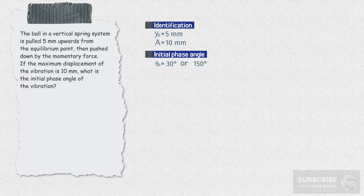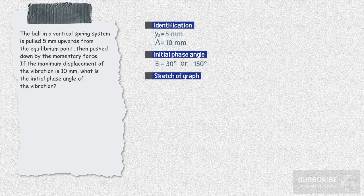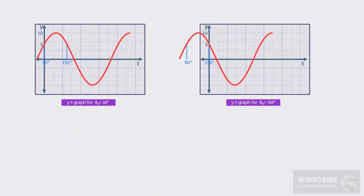To determine the appropriate value, draw a sketch of simple harmonic motion. Because the ball is pushed down, the appropriate value is theta zero equals 150 degrees, or 5 pi over 6 radians.